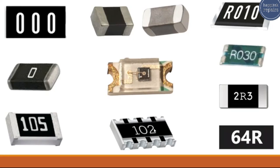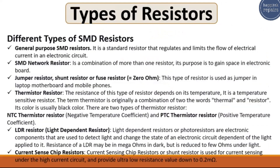This is a jumper resistor or fuse resistor — zero ohms. As you can see, we have triple zero here, or a single zero, indicating a zero ohm resistor. This standard resistor has the first digit, the second digit, and the third digit meaning five zeros — so this is a one mega-ohm resistor.